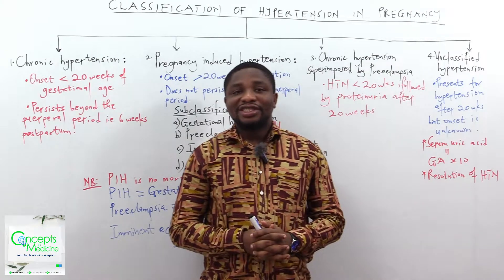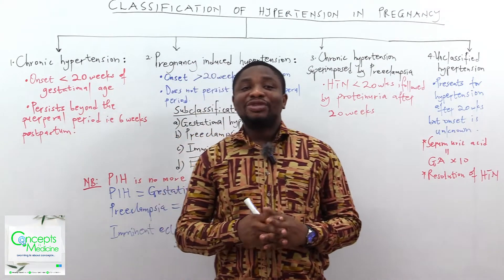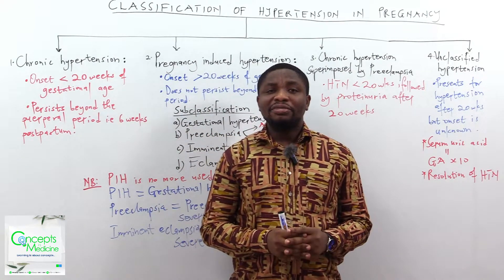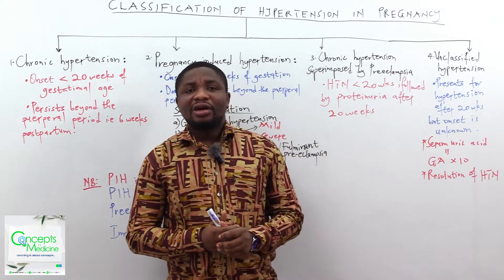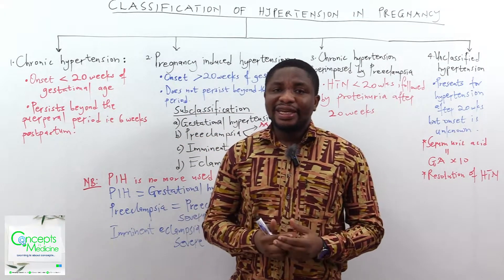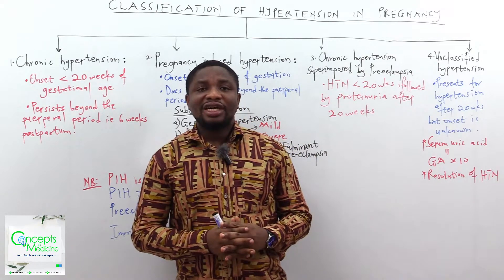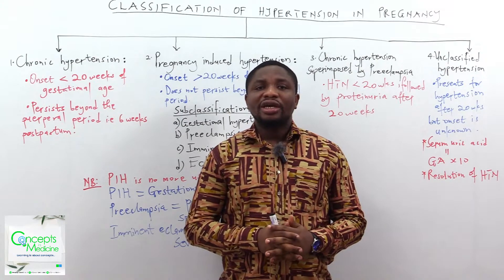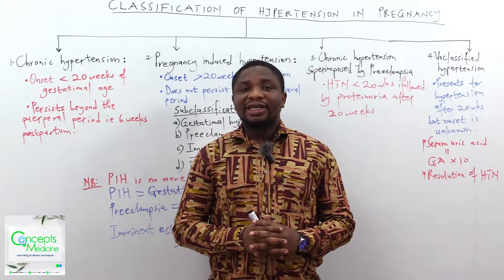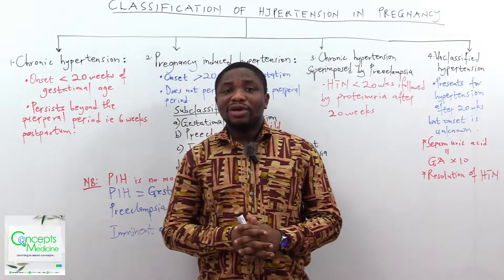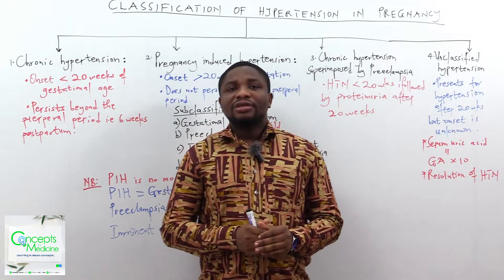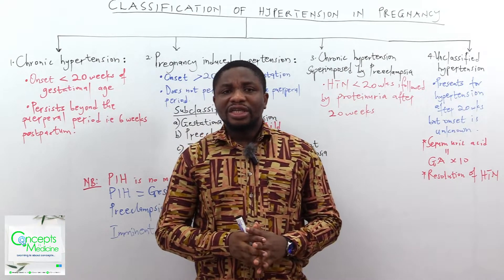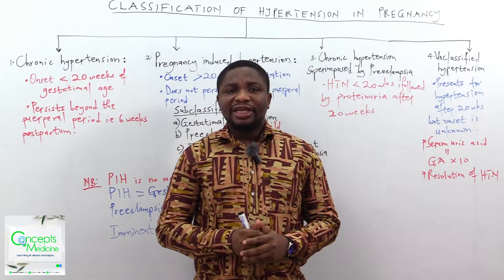Before we start looking at the classification, let's know what hypertension in pregnancy is. Simply, it is a disorder characterized by sustained elevated systolic blood pressure of greater than or equal to 140 millimeters of mercury, and/or diastolic blood pressure greater than or equal to 90 millimeters of mercury, taking two consecutive times at least four to six hours apart in a previously normotensive pregnant woman.